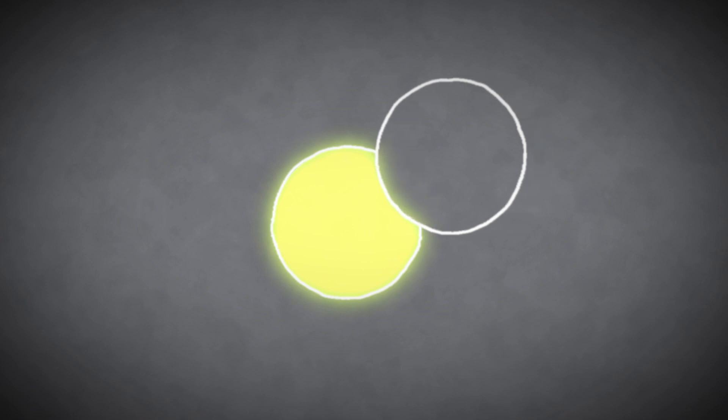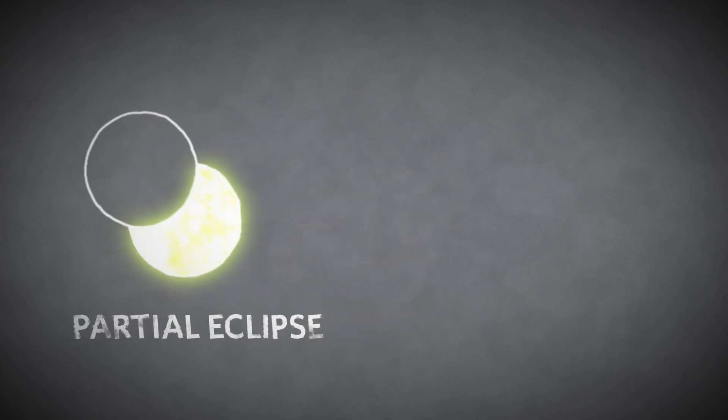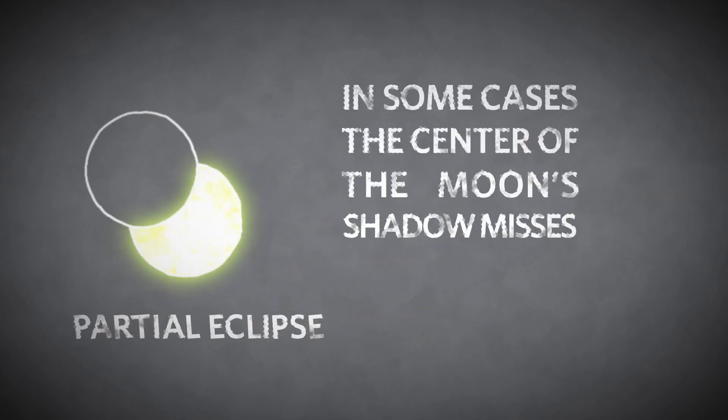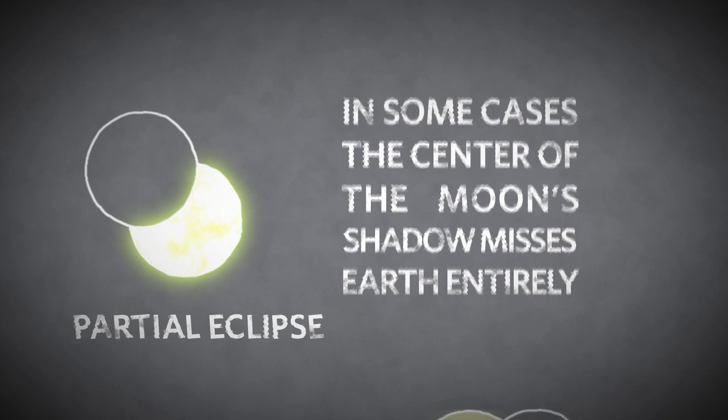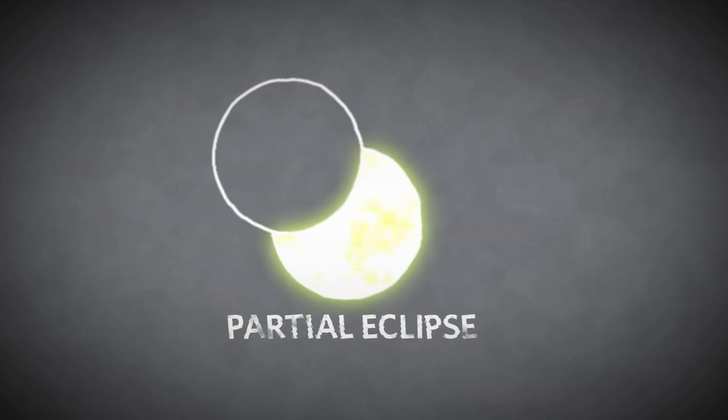Observers not located on the path of the moon's shadow will see only a partial eclipse, in which the moon's silhouette doesn't completely block the sun from view. In some cases, the center of the moon's shadow misses Earth entirely, and no one gets to see totality or the annulus, although a partial eclipse can still be observed.